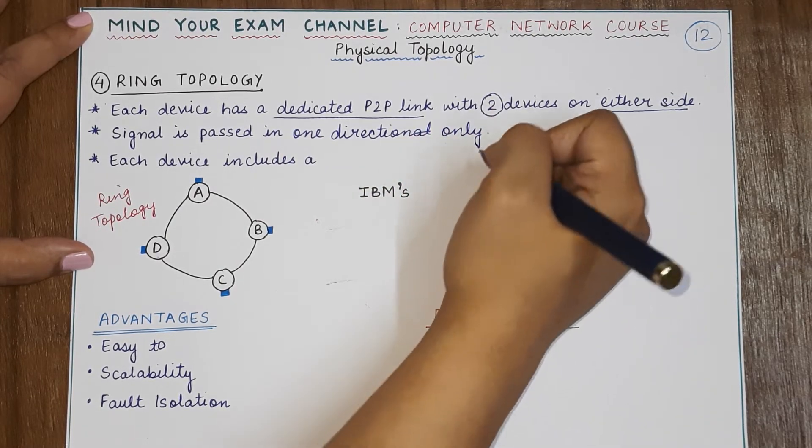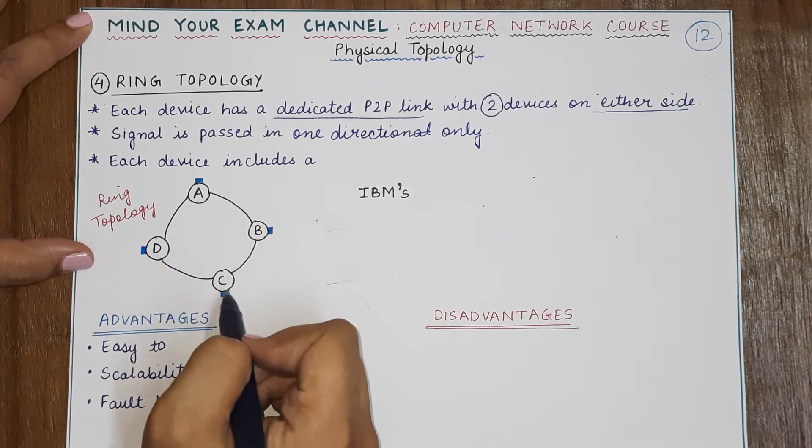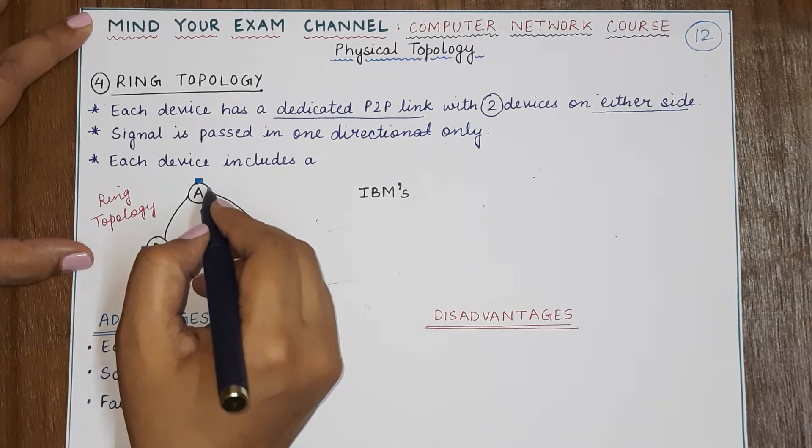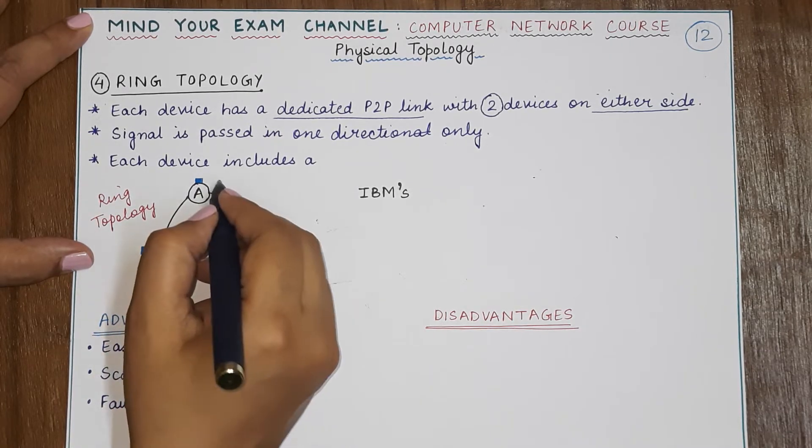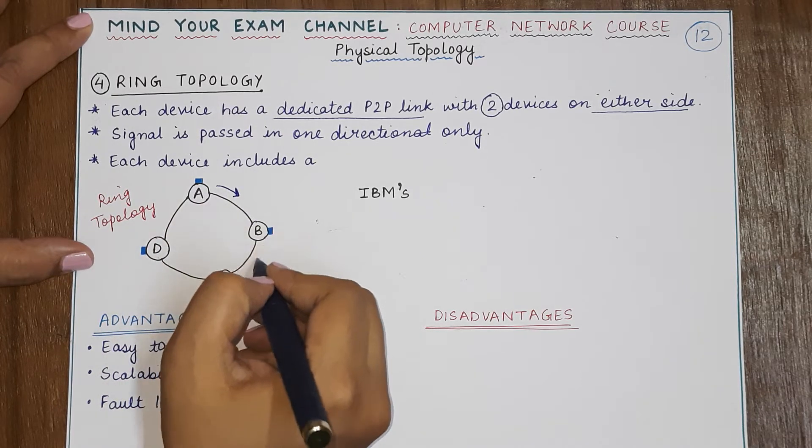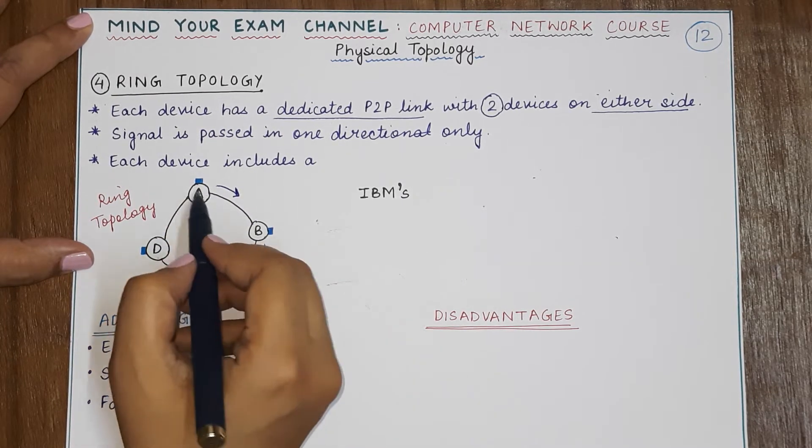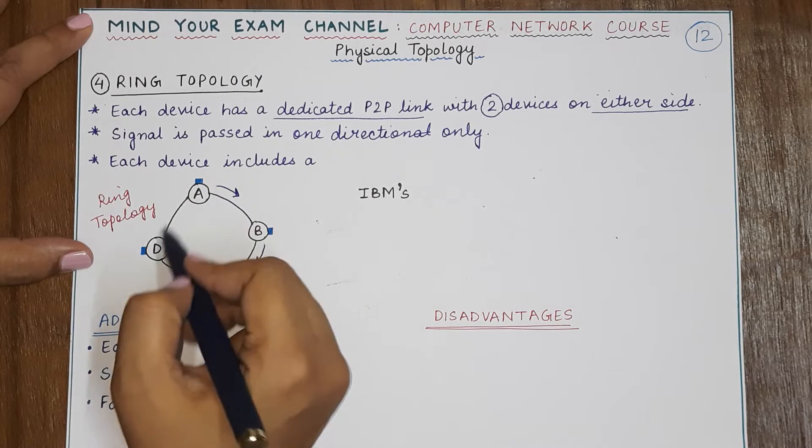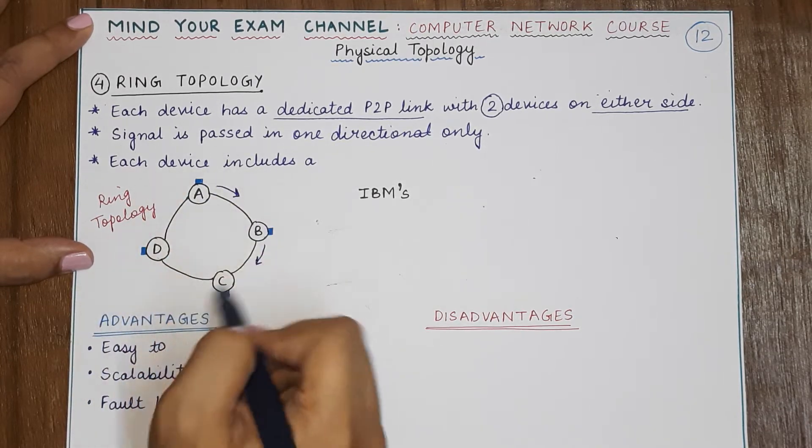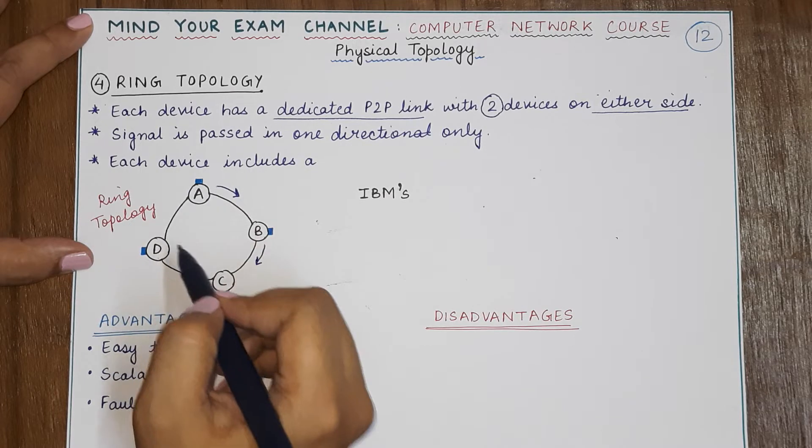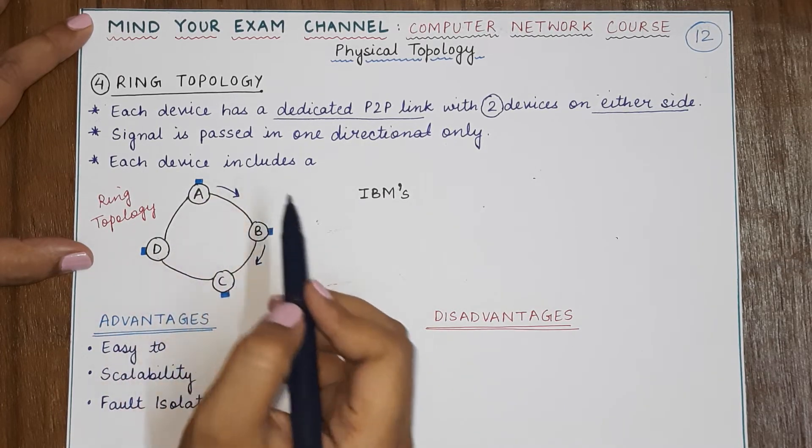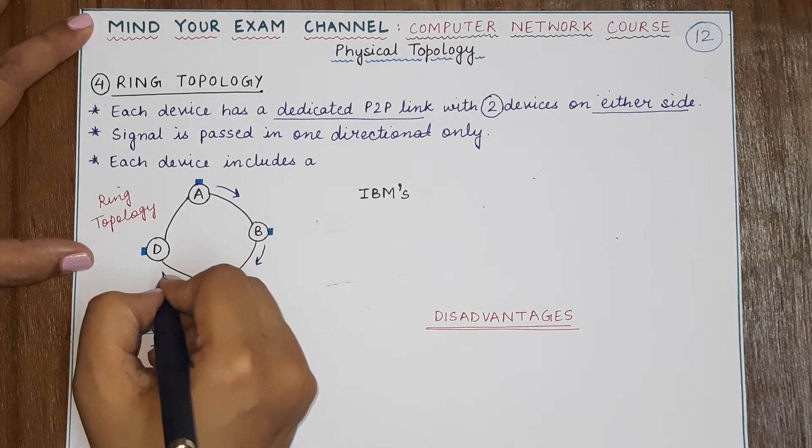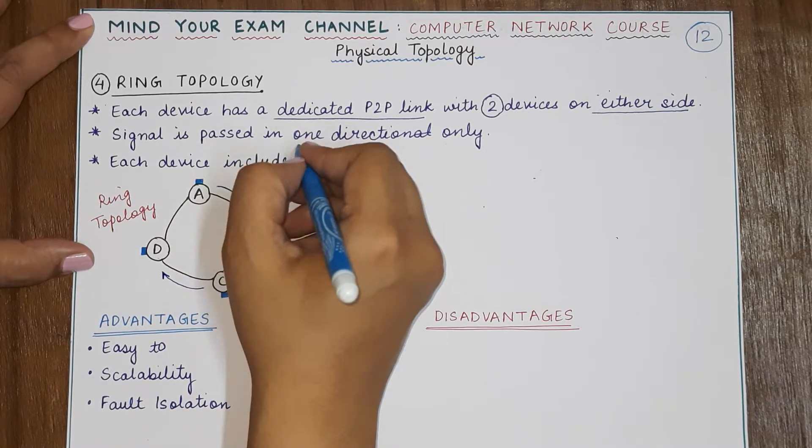Now this point is important because if A has to communicate with C and the devices have agreed upon that the movement of the signal would be clockwise, that means A will be sending data to B and B will be sending data to C. Even if A wants to send data to D and it has a direct connection, it will not use this direct connection because the ring topology has its rules that signal will travel only in one direction. So that direction will be A to B, B to C, and then C to D. That is why this point becomes extremely important.